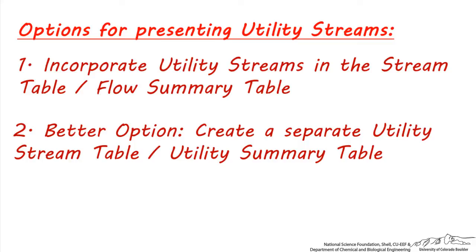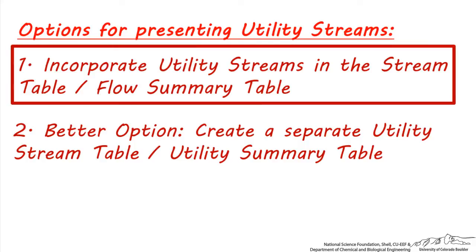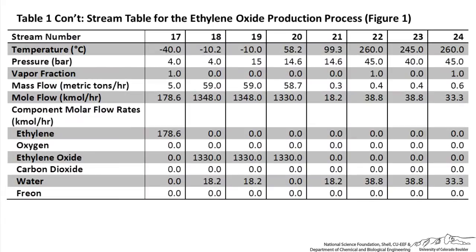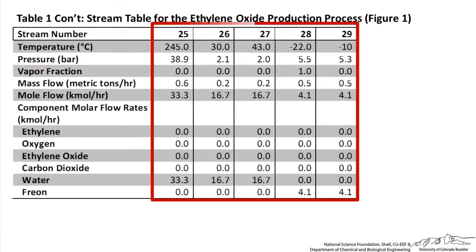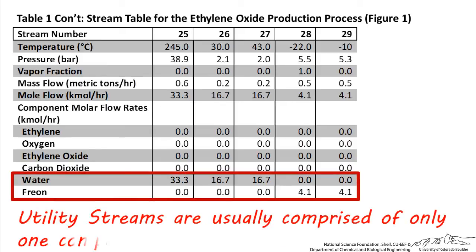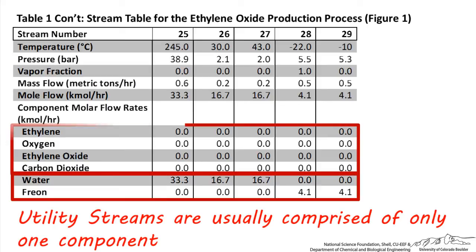This is a better option for a few reasons. Let's look at an example where the utility streams are incorporated into a stream table to see why. This is the stream table for our process — notice these are the process streams, and these are the utility streams. Notice that utility streams usually don't have a complicated composition with many individual flow rates in each stream. They are usually made up of only one component, such as water or refrigerant, so it's not necessary to provide details on the individual concentrations of many different chemicals in each stream.